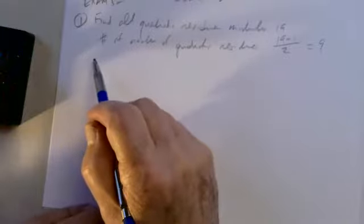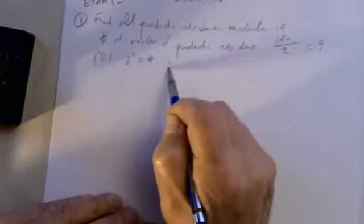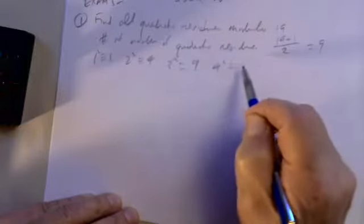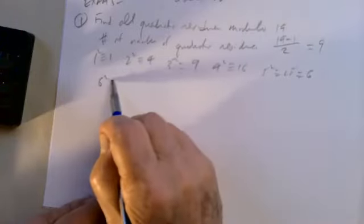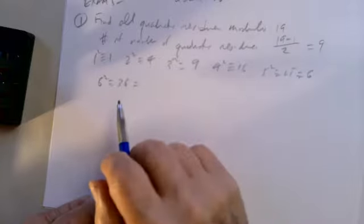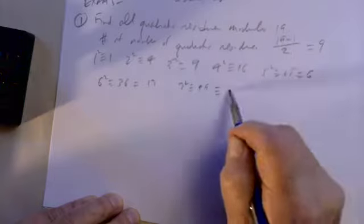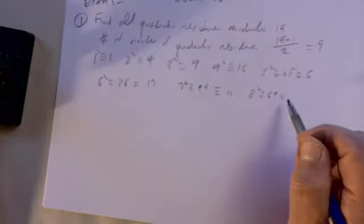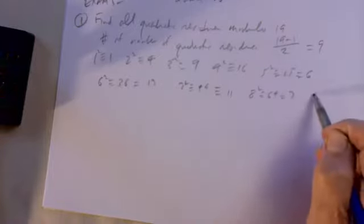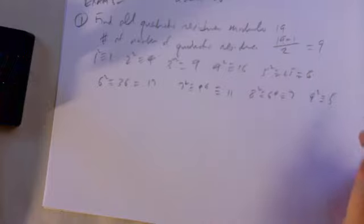All you have to do is take the squares of the first nine positive integers. One squared is 1, two squared is 4, three squared is 9, four squared is 16 — everything is modulo 19. Five squared is 25, which is the same as 6. Six squared is 36, which modulo 19 is 17. Seven squared is 49; 49 minus 38 gives 11. Eight squared is 64; 64 minus 57 (which is 3×19) gives 7. Nine squared is 81; since 4×19=76, nine squared is 5.